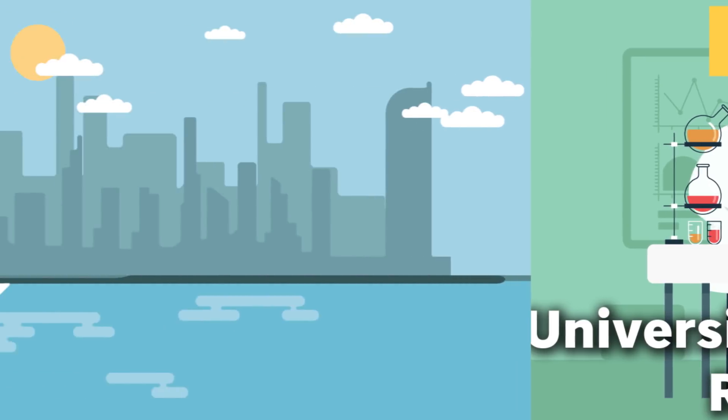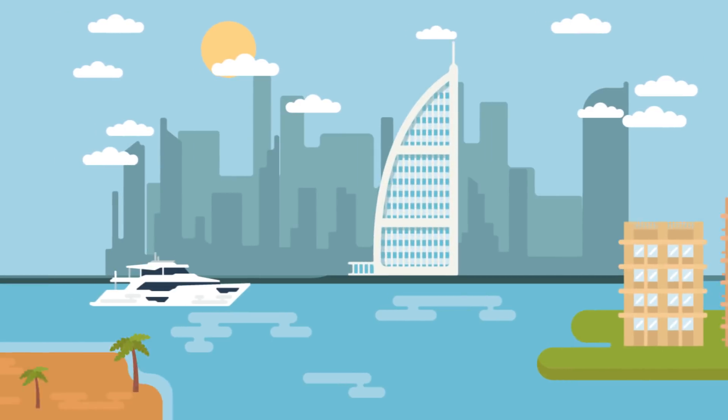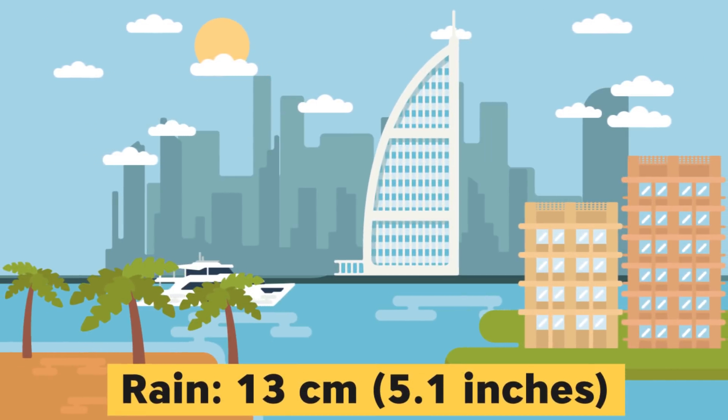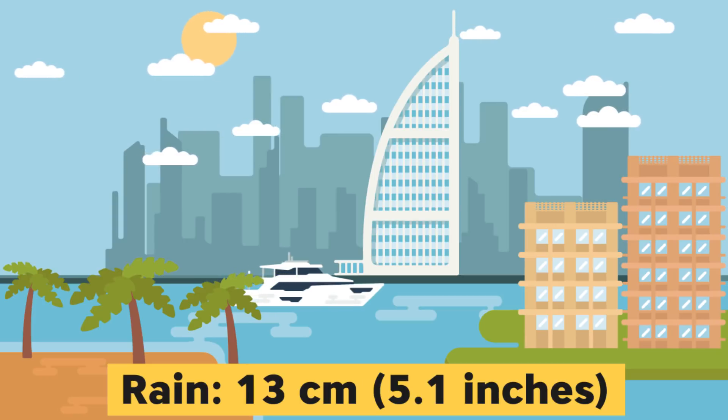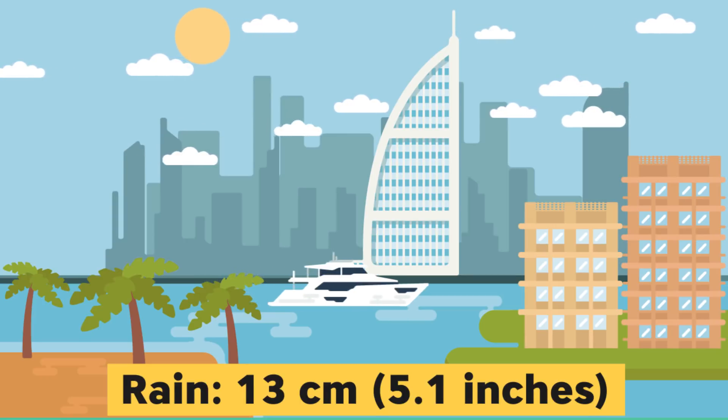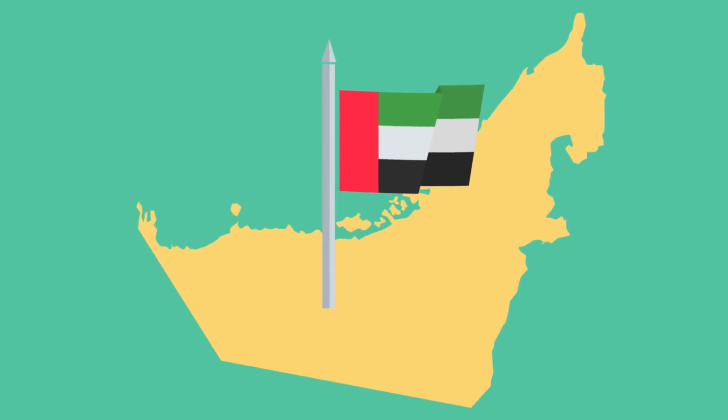In the average year, the UAE receives less than 13 centimeters of rain, which just isn't enough to support their rapidly growing population, expats, and soaring standards of living. Water shortages are a serious threat in the UAE because it's basically a desert.